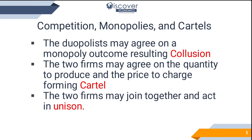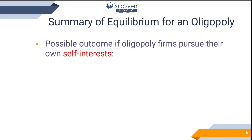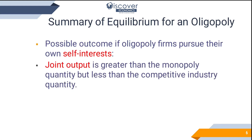Two firms may join together and act in unison — they might unite and work together. These are the three outcomes oligopolists can form. Regarding the summary of equilibrium: the first possible outcome is when oligopoly firms pursue their own self-interest, prioritizing individual gain even while working in a group.